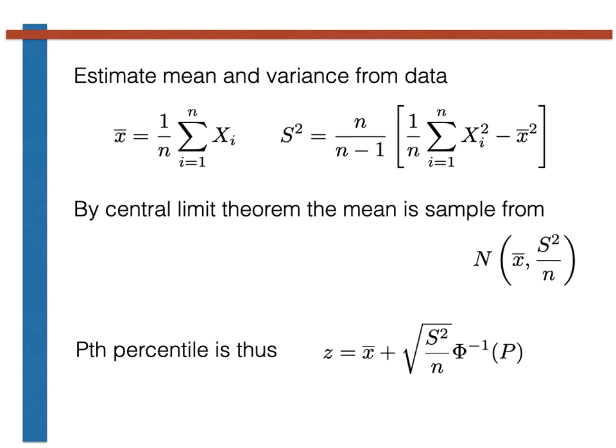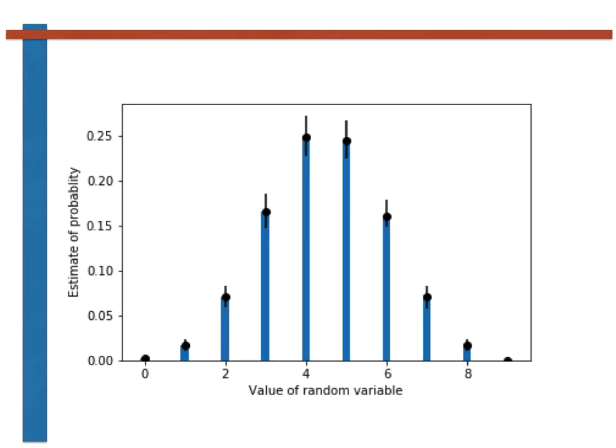Now, in previous weeks we have used resampling to estimate error bars on histograms and to generate graphs like the one shown here. A reasonable question you are perhaps asking yourself is whether it is possible to calculate these error bars on histograms using the cheap method based on the central limit theorem that I introduced in the previous video, instead of using resampling.